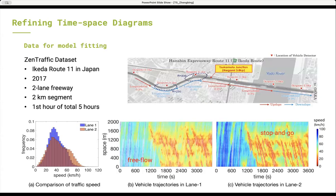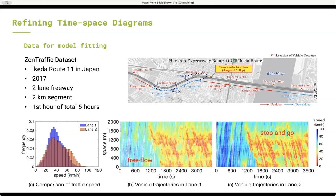The data for model fitting was collected in 2017 on the two-lane freeway segment in Japan. The length of the segment is 2 km and the total duration of data collection is 5 hours. The first hour of data was used to estimate the model parameters in this work.